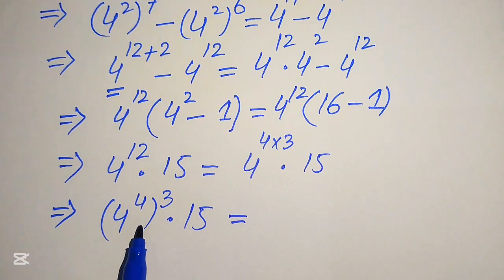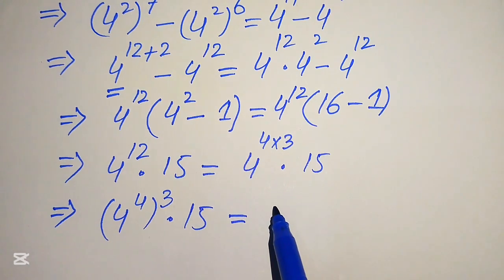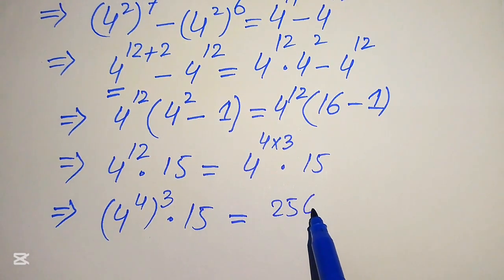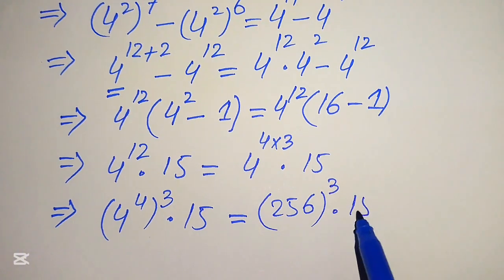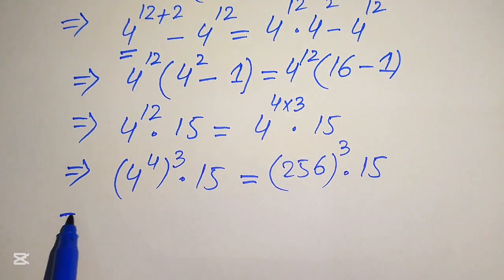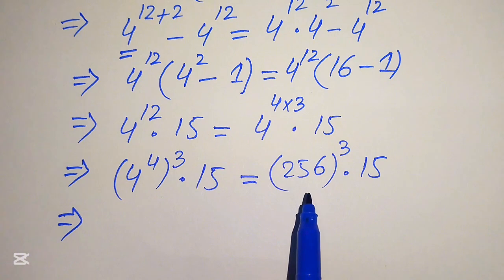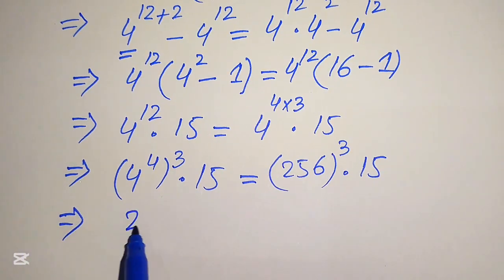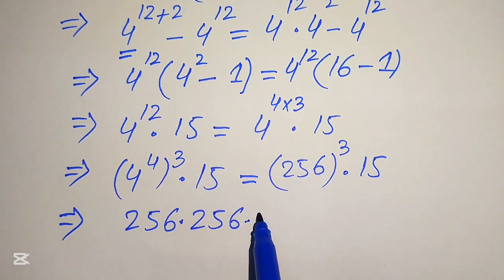We calculate 4 to the power of 4, which equals 256. So the expression becomes 256 cubed, multiplied by 15. A number cubed means it is multiplied by itself 3 times, so 256 cubed means we multiply 256 three times, and at the last step we multiply by 15.